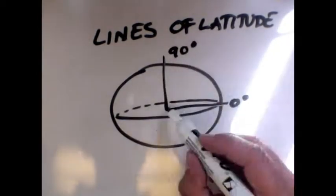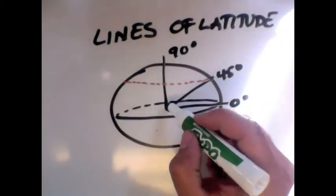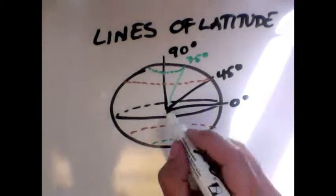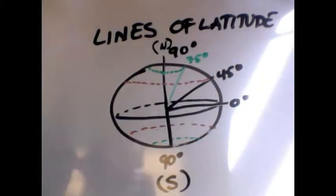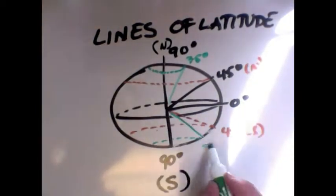You start at the equator and imagine having a protractor there. Ninety degrees is the North Pole, 45 degrees is the halfway point, you have 75 degrees, and you can have any degree as you want. Since there's a North and South hemisphere, you have 90 degrees north as well as 90 degrees south and everything in between.